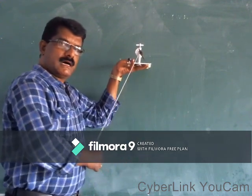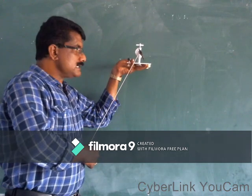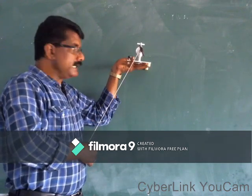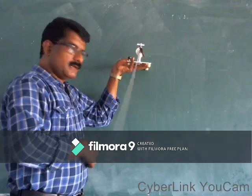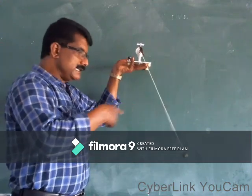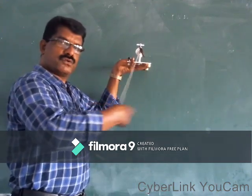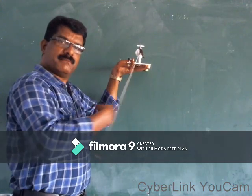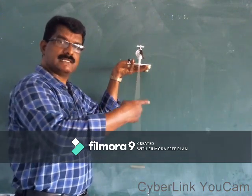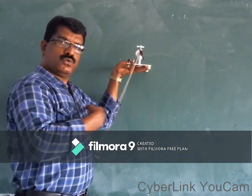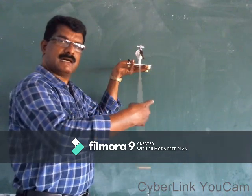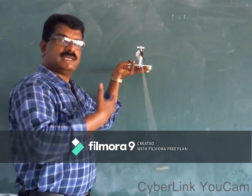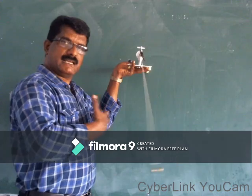I just brought this simple pendulum towards one side and released it. Now see, it exhibits to and fro motion. This to and fro motion of a pendulum is known as oscillation. To and fro motion of any object is called oscillation.